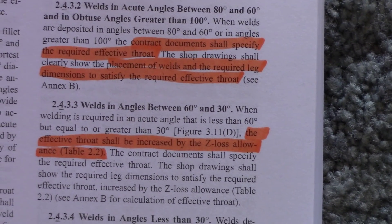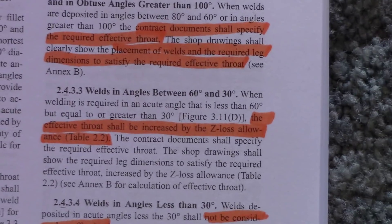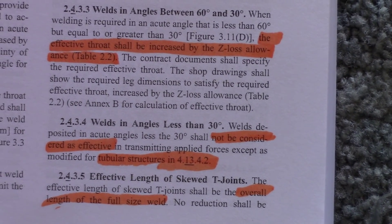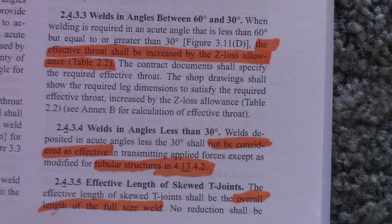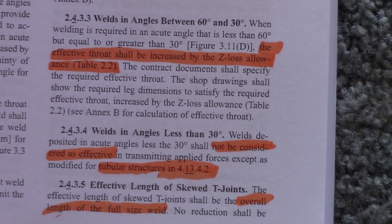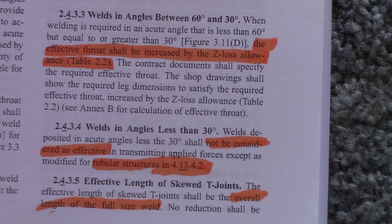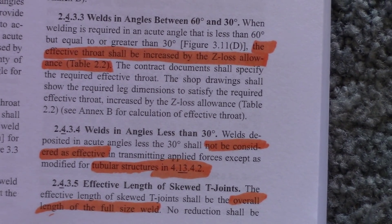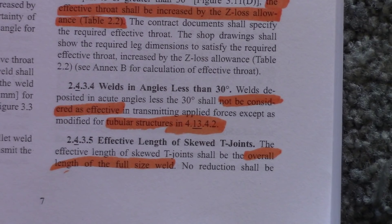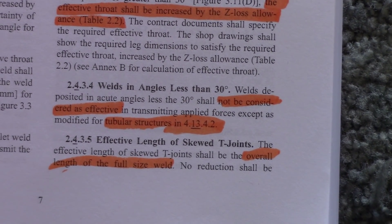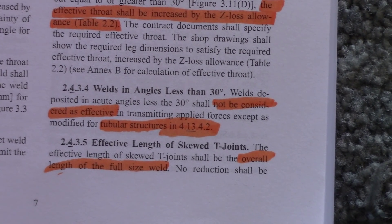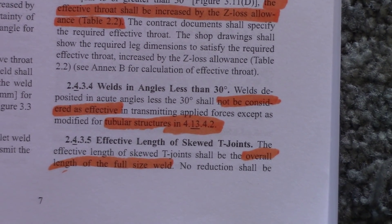For angles between 60 and 30 degrees, the effective throat shall be increased by the Z-loss allowance on table 2.2 — we'll look at that in a minute. For welds in angles less than 30 degrees, welds deposited in acute angles less than 30 degrees shall not be considered effective in transmitting applied forces, except for modified tubular structures. So basically, when you get less than 30 degrees, it's too sharp of an angle and it's no good. The effective length of the skewed T-joint shall be the overall length of the full-size weld — pretty basic, just the length of the weld.